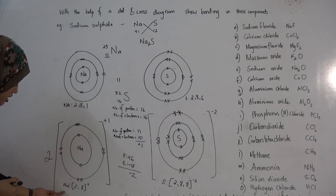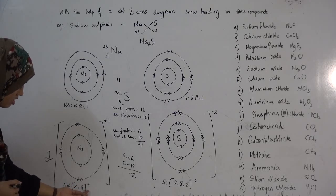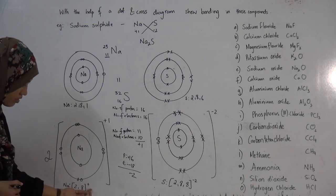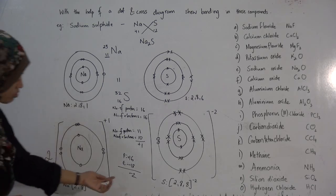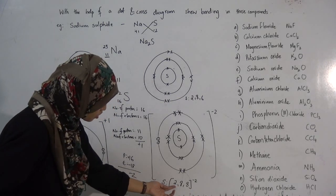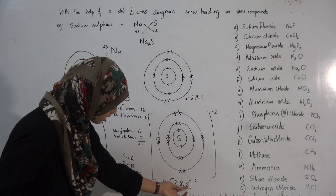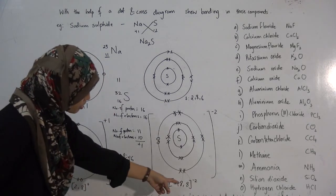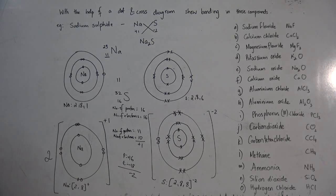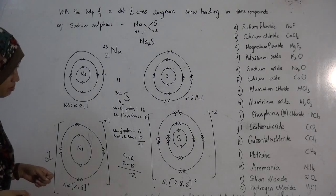This is another way you can show the bonding — it shows the electronic configuration plus the fact that sodium has lost an electron. One sodium atom has lost an electron, and this is the entire configuration of sulfur: 2, 8, 8. The −2 charge shows that sulfur has gained two electrons per atom.